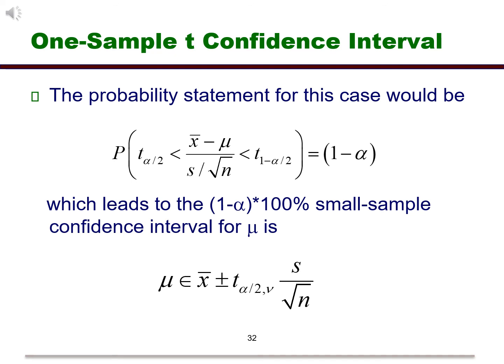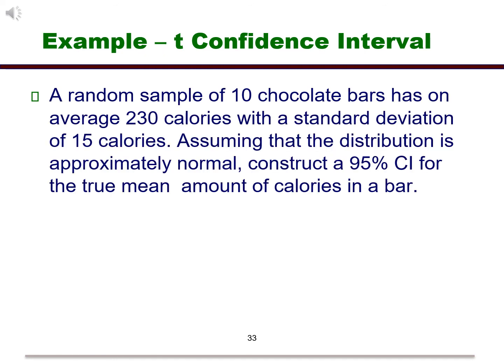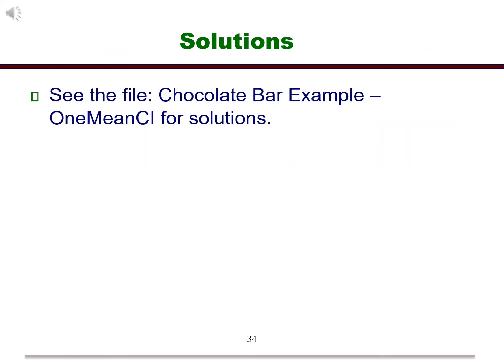Here is an example using calories in chocolate bars. We need to create a 95% confidence interval for the average number of calories. The solutions for this problem are in a file called chocolate bar example dash one mean ci.